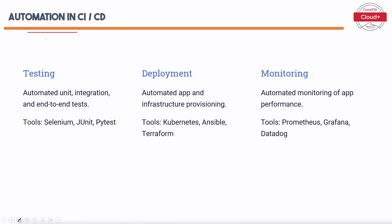Automation plays a very important role in the CI-CD process. The main areas of automation are: Testing — automated unit, integration, and end-to-end tests using tools like Selenium, JUnit, and PyTest. Deployment — automated app and infrastructure provisioning using tools such as Kubernetes, Ansible, and Terraform. Monitoring — automated monitoring of app performance using tools like Prometheus, Grafana, and Datadog, providing real-time insights into application health.